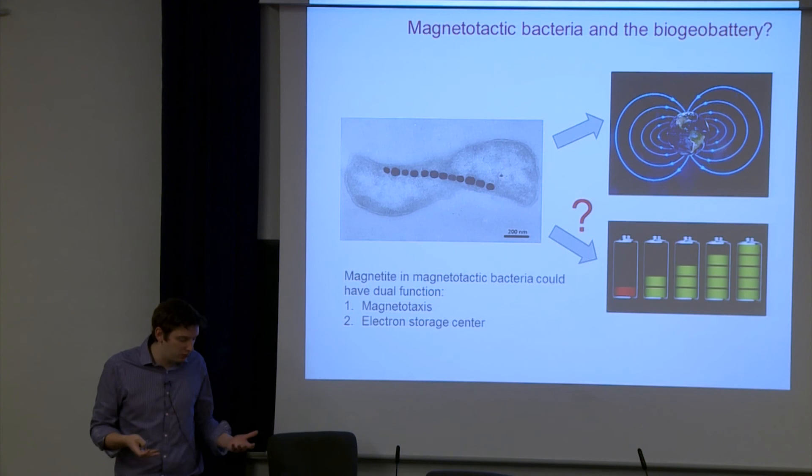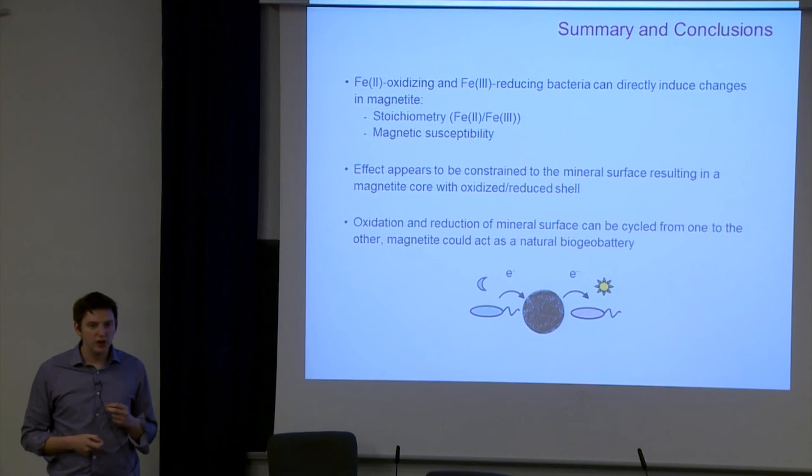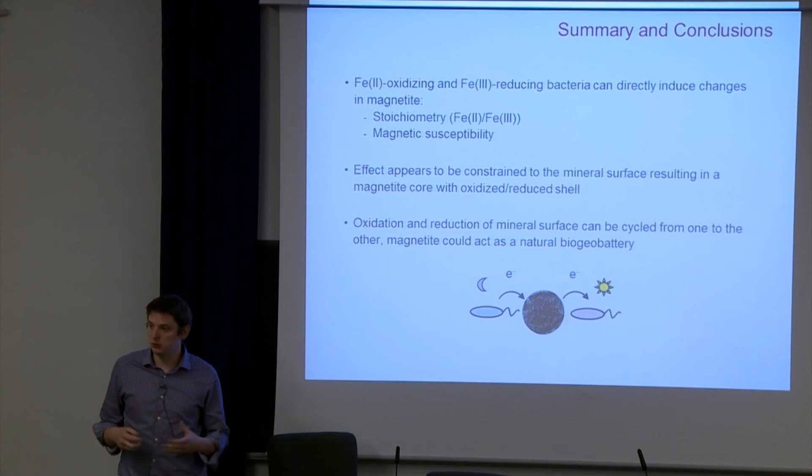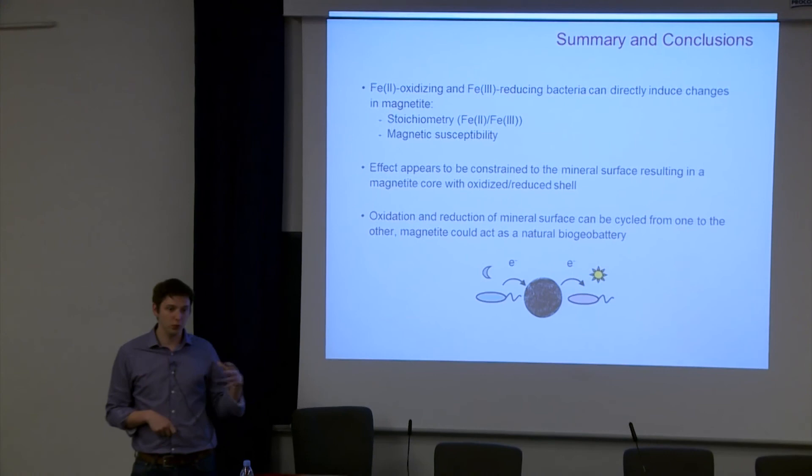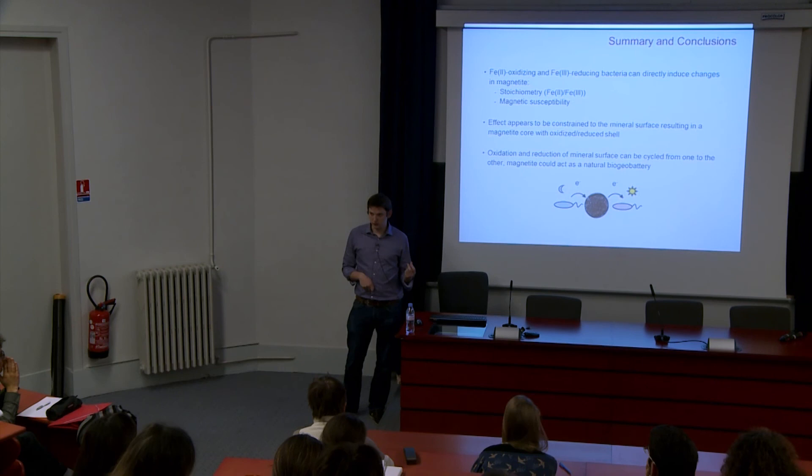But to go back to my work, we've got iron reducing and iron oxidizing bacteria. These iron metabolizers, they're able to induce changes in the stoichiometry of magnetite. They can change the magnetization. At the moment, we think this is constrained to the surface. Of course, the way of testing this would be to use larger crystals. I have done some experiments with this, and we've got tentative evidence that supports the idea that it's a surface-constrained effect. Finally, we've believed that this can be cycled from one phase to another, oxidation or reduction, supporting the idea of magnetite being used as a biogeobattery. But with that, I'd just like to thank you for your attention and acknowledge the people who have been involved with this work.